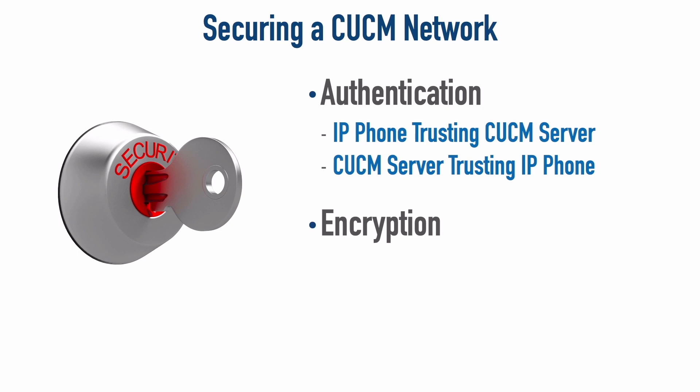To protect against wiretapping, we can also encrypt our traffic. Encryption scrambles up data so that if somebody intercepts it, they can't make sense of it because they don't have the key needed to unlock the encryption. We're going to be encrypting both our signaling traffic and our media traffic — voice media as well as video media. Signaling will be protected using TLS, transport layer security, and media will be secured with SRTP, the secure version of the real-time transport protocol.